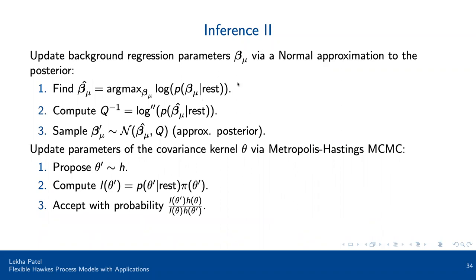For regression parameters of the background intensity, we use a normal approximation to the posterior. We maximize the log posterior of the density of regression parameters given the rest of our parameters, then use that as a plug-in to generate new samples with a Gaussian approximation, also using the Hessian from the second derivative of the log conditional density. For the covariance kernel parameters, Metropolis-Hastings was used in this first pass, though it is not very efficient and better methods exist.